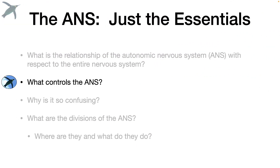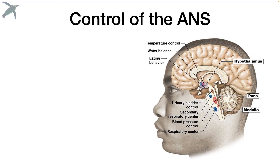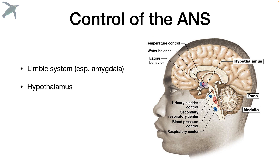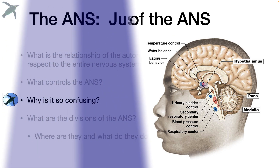What controls the ANS? We're talking about primarily the midbrain, including the limbic system — especially the amygdala — the hypothalamus, the medulla, and the pons.